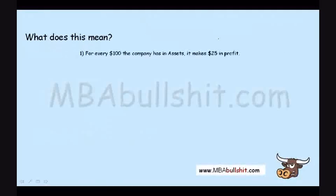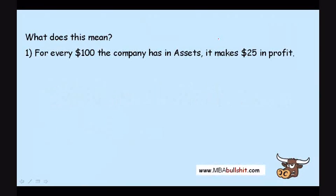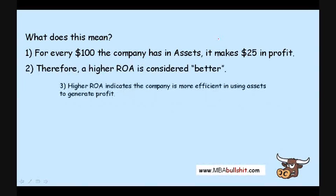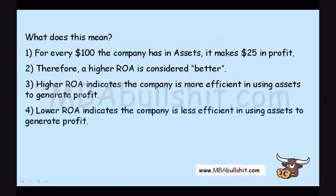Well, this means that for every $100 the company has in assets, it makes $25 in profit per year. Therefore, a higher ROA is considered better. A higher ROA indicates that the company is more efficient in using assets to generate profit. A lower ROA indicates less efficiency in using assets to generate profit.